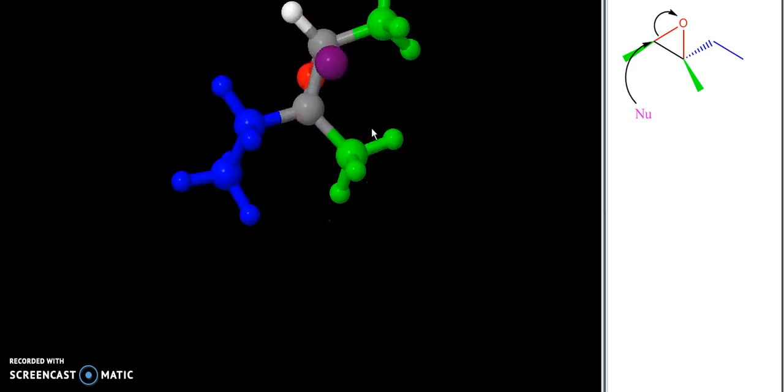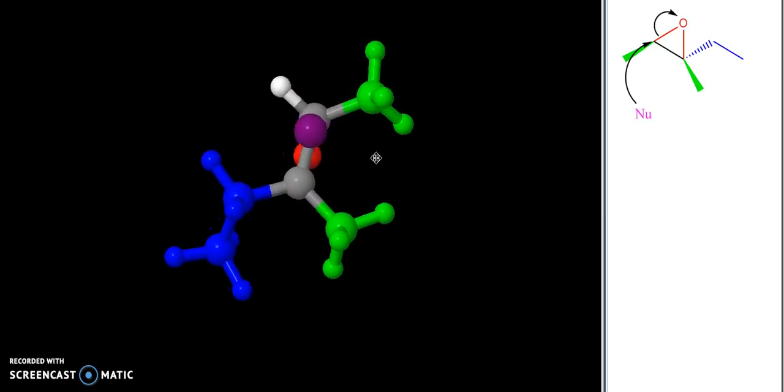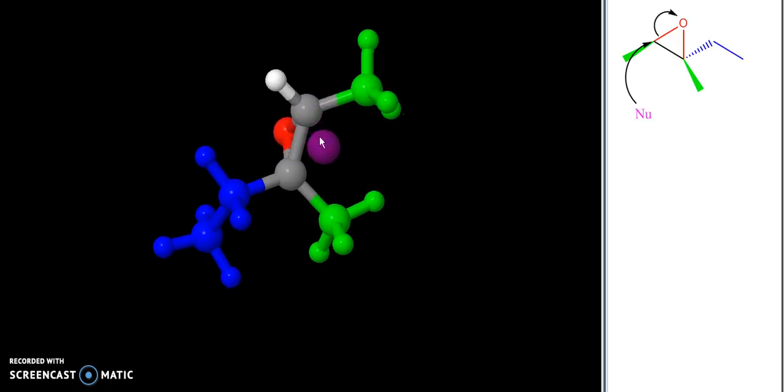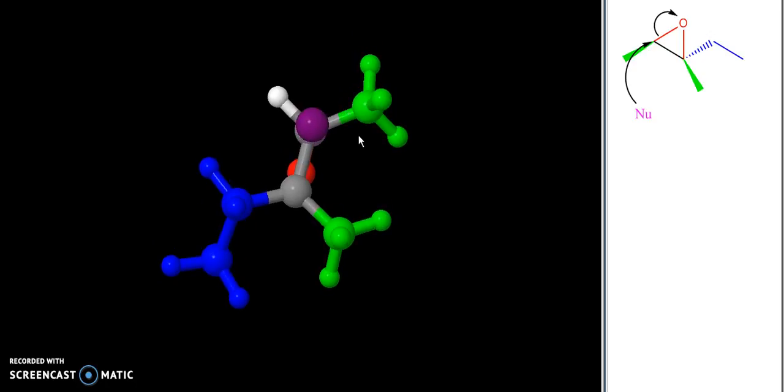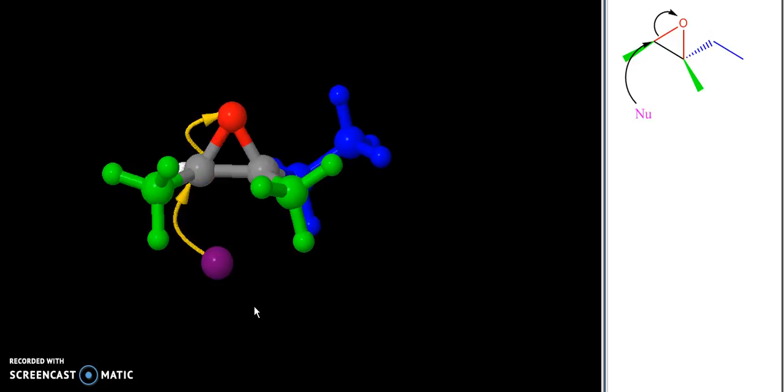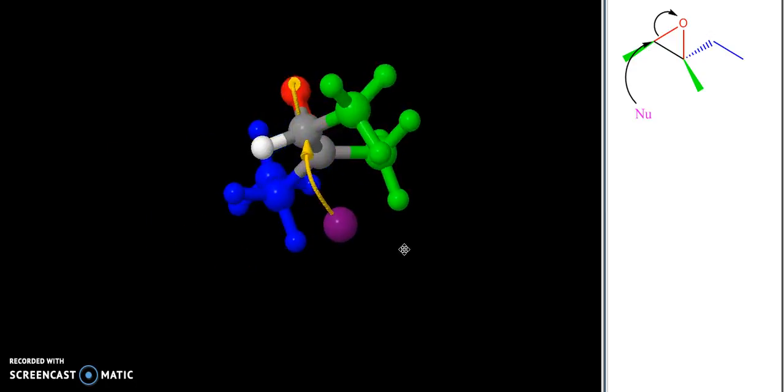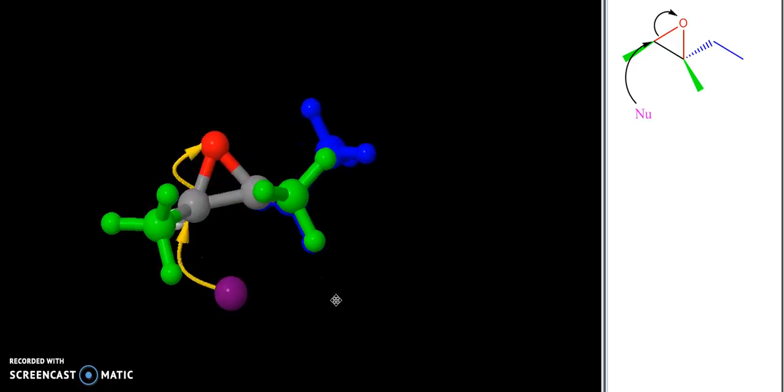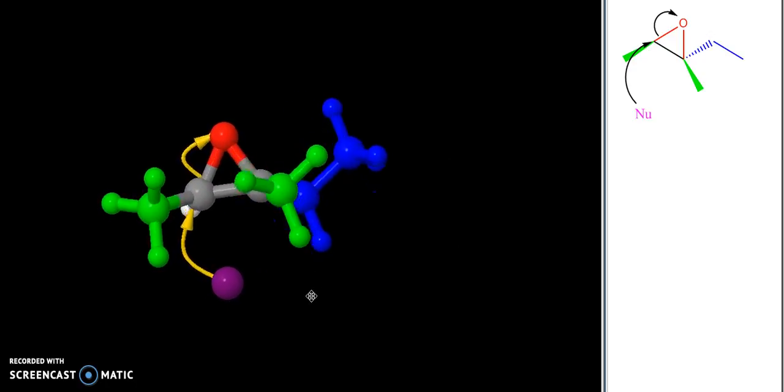it in the least sterically hindered approach on this carbon, and it's slightly off-center from my leaving group, but that's the approximate direction of approach in the three-dimensional model. The arrows showing the electron movement look like this, where if I rotate it you can see my nucleophile comes in from the side opposite of my oxygen, and my oxygen leaves.